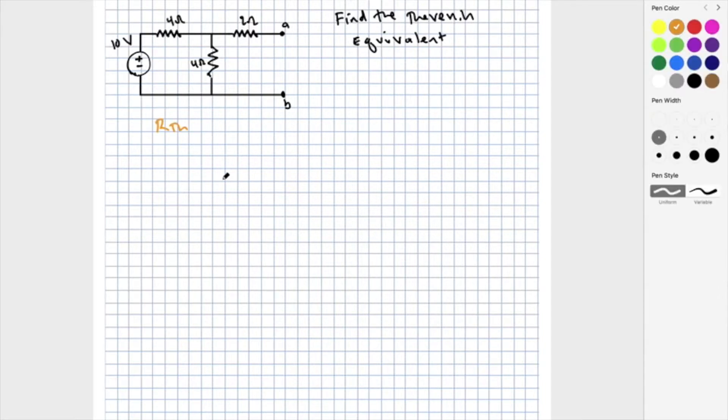Let's start with R-Thevenin. We first turn off all sources and redraw the circuit. We are looking for the resistance between the two terminals. To do this, we use our combining resistors knowledge. Starting as far as possible from the terminals, we get 4 in parallel with 4, which is calculated as 2 ohms. That equivalent 2 ohm resistor is in series with the remaining 2 ohm resistor, and we add these together to get 4 ohms as R-Thevenin.